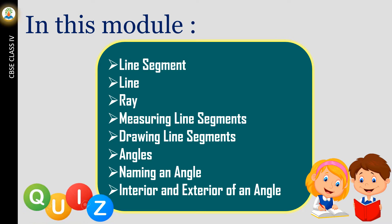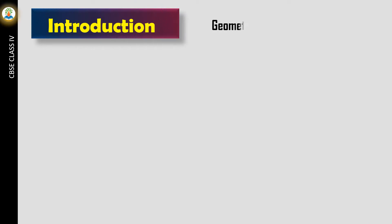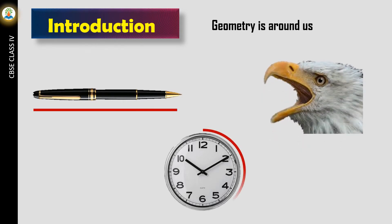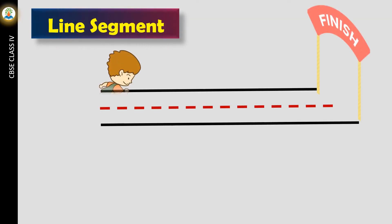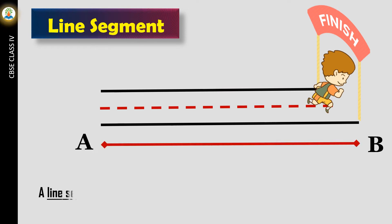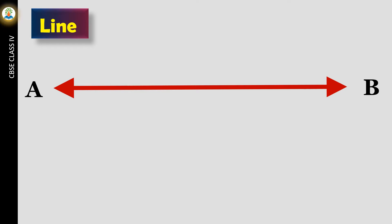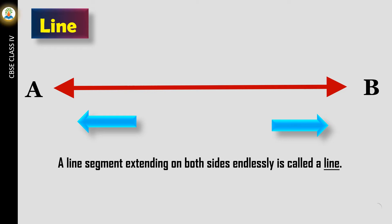Geometry is around us. A line segment is a straight line having a beginning point and an end point. A line segment extending on both sides endlessly is called a line. A ray is part of a line which extends endlessly in one direction only.